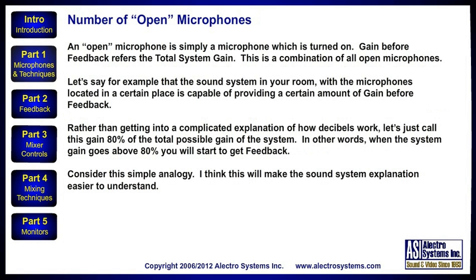The number of open microphones is important. An open microphone is simply a microphone which is turned on. Gain before feedback refers to the total system gain — a combination of all the open microphones together. For example, the sound system in your room, with microphones located in a certain place, is capable of providing a certain amount of gain before feedback. Rather than getting into a complicated explanation of how decibels work, let's just call this gain 80% of the total possible gain of the system. When the system gain goes above 80%, you will start to get feedback.